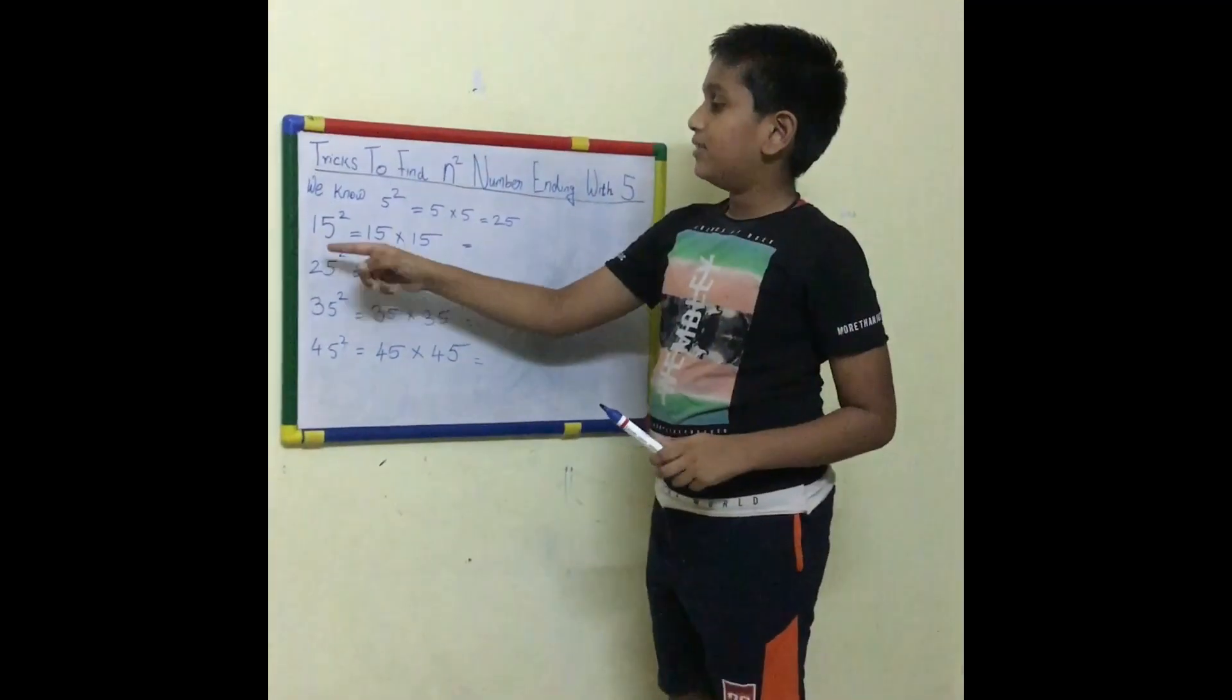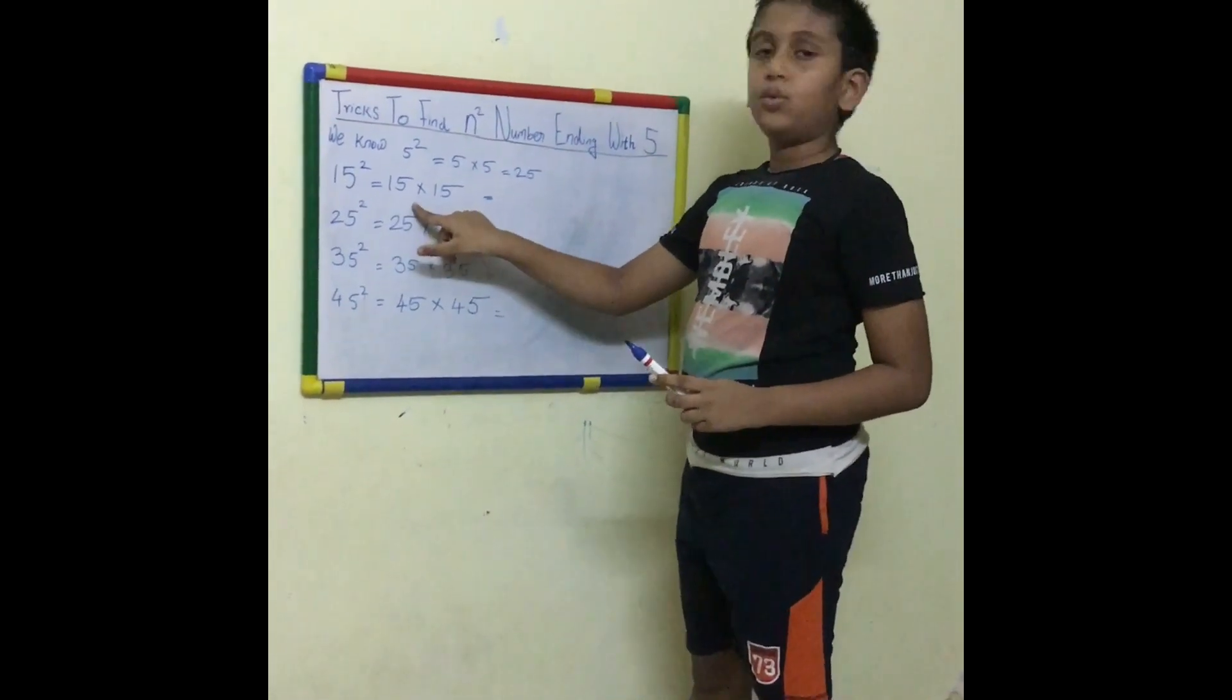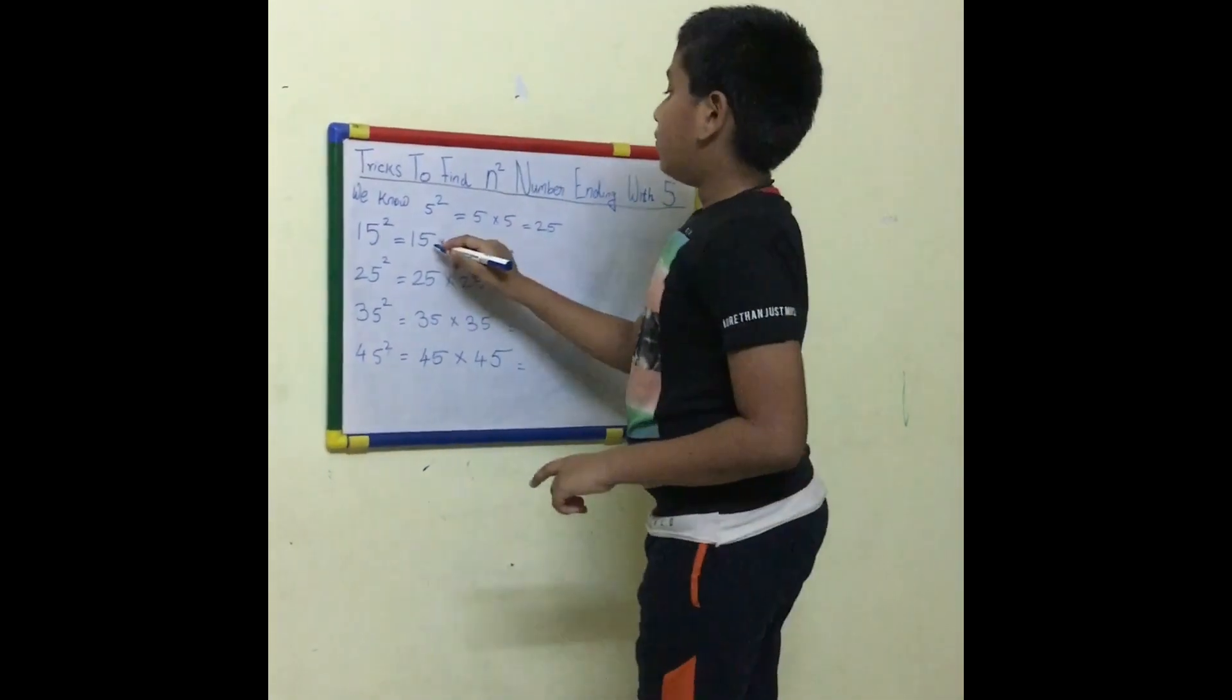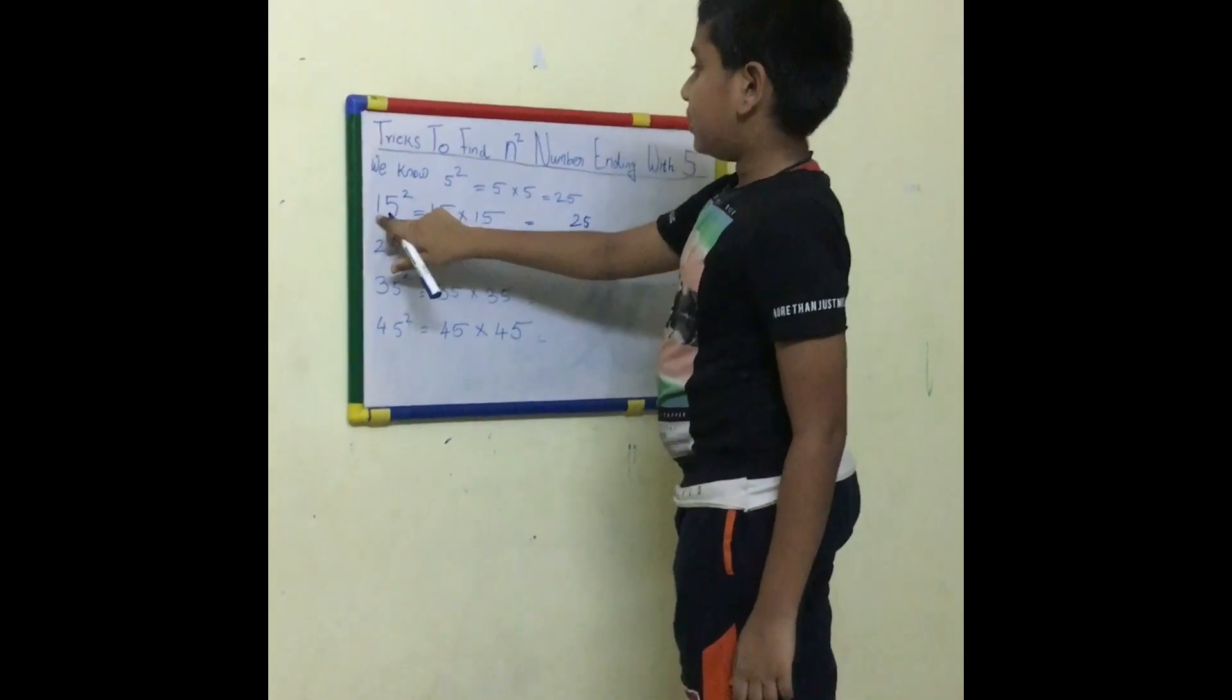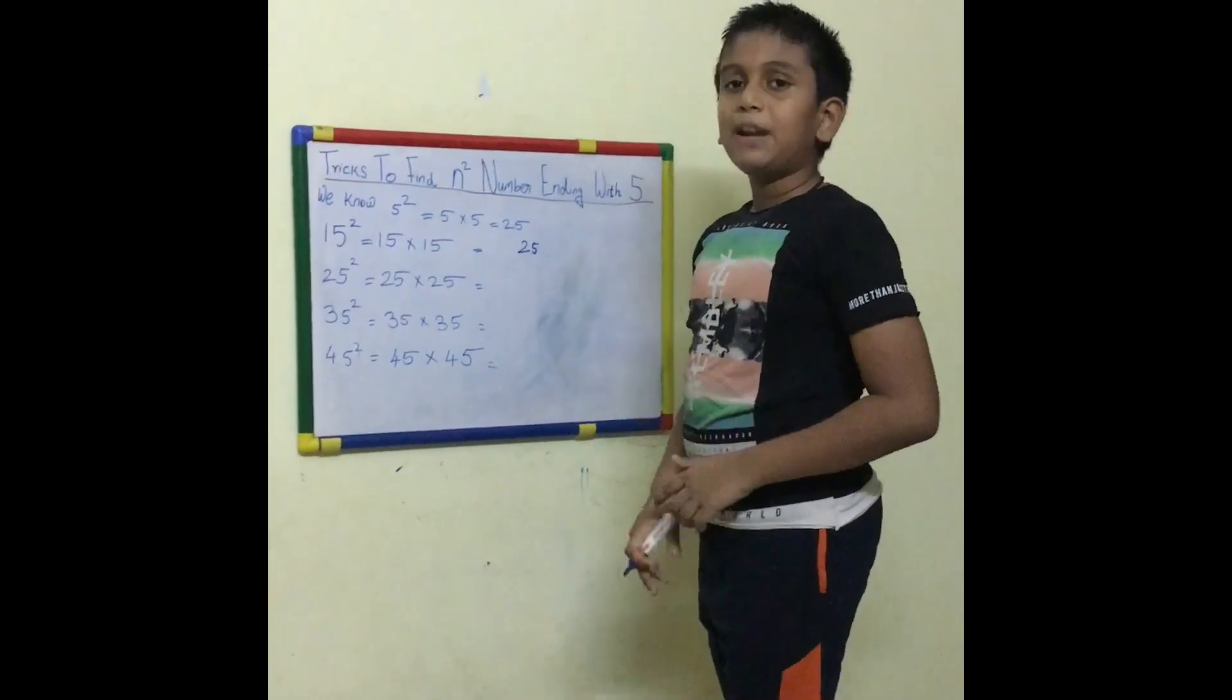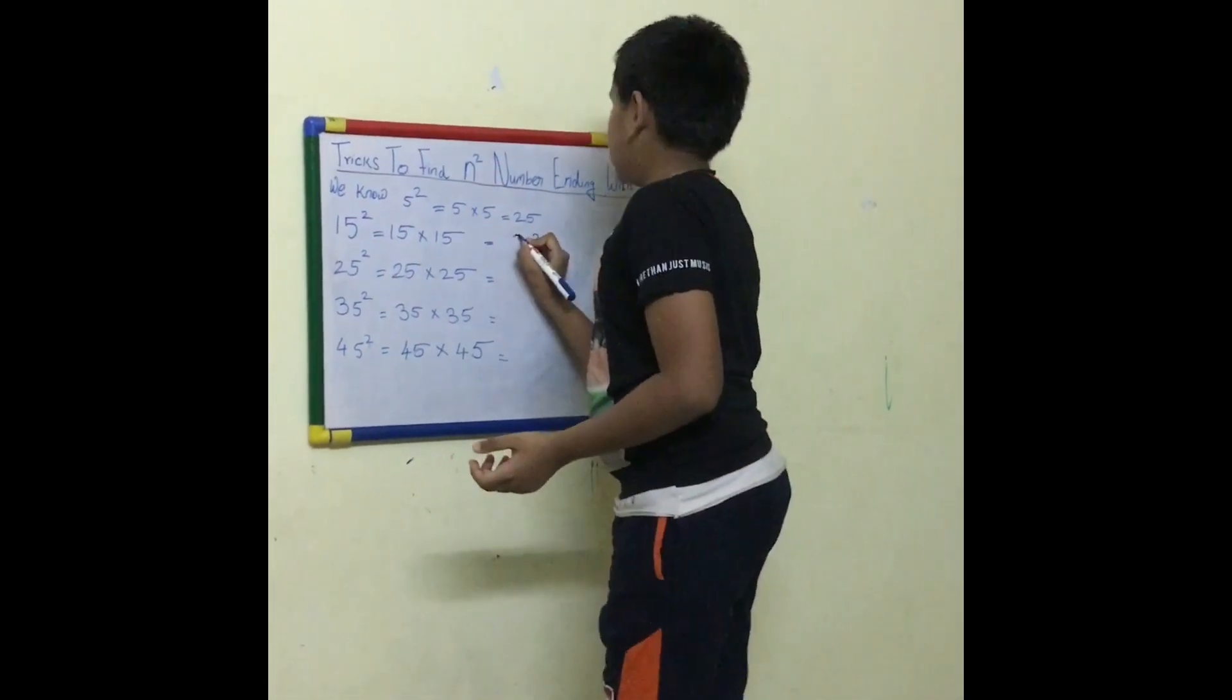It is very easy to find 15 squared too. We know that 15 squared means 15 into 15. For finding it, it is very simple. 5 into 5 means 25. The first number is 1. That means we have to multiply with the successor of 1, which is 2.